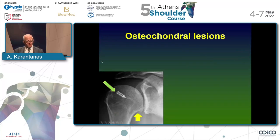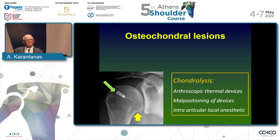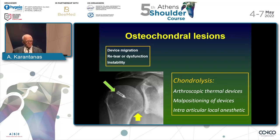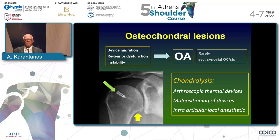Regarding osteochondral lesions, chondrolysis — destruction of cartilage — results from thermal devices during arthroscopy or malposition of devices. We also need to be very careful about the amount and type of anesthetic used intra-articularly. Overall, device migration, retear, and instability may result in osteoarthritis and rarely synovial osteochondromatosis, as we have already shown.